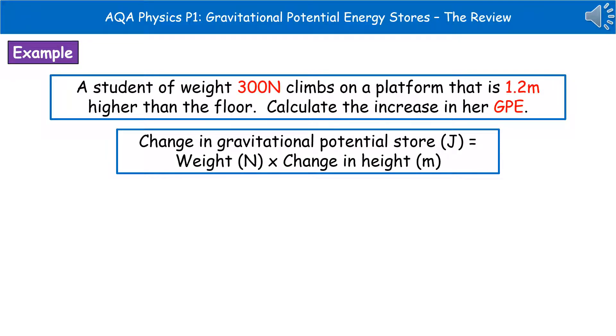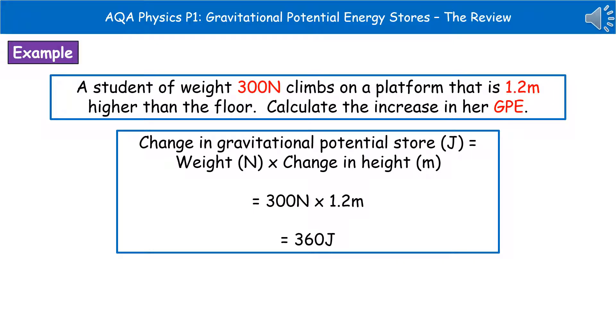The second thing to do is always write down the equation you're going to use, because that can be worth a mark on its own. In this case, change in gravitational potential store is the weight times the change in height. Then we need to substitute in our values. The weight is 300 newtons, the height is 1.2 meters. So our calculation is 300 times 1.2, which gives us an answer of 360 joules.